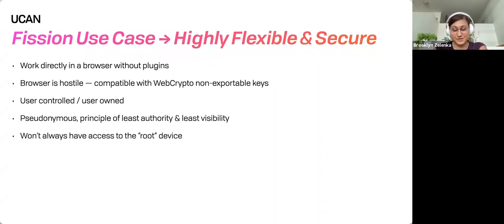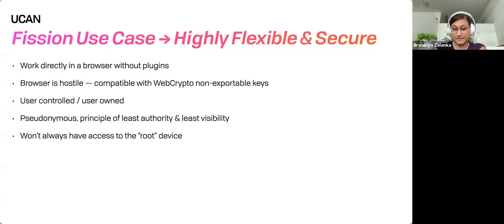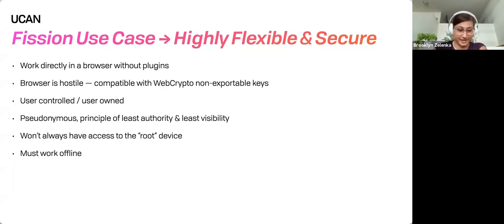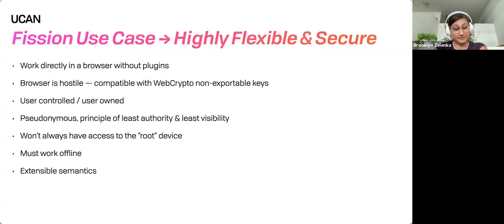Following the principle of least authority and least visibility — we want to leak as little information about the user and have as little correlatable data as possible. Given that you won't always have access to the root device — the one with the original key on it — think of that like your original wallet. What if you left your phone at home or dropped it in a puddle? It has to work offline; we can't be constantly phoning home or checking on a blockchain. Even if there's a network partition, this continues to work.